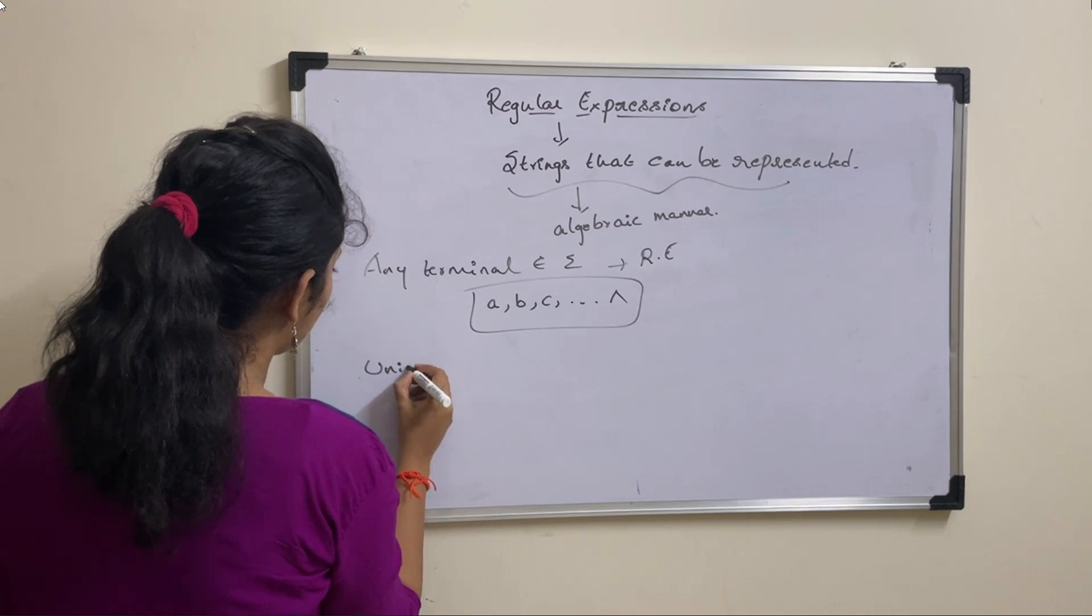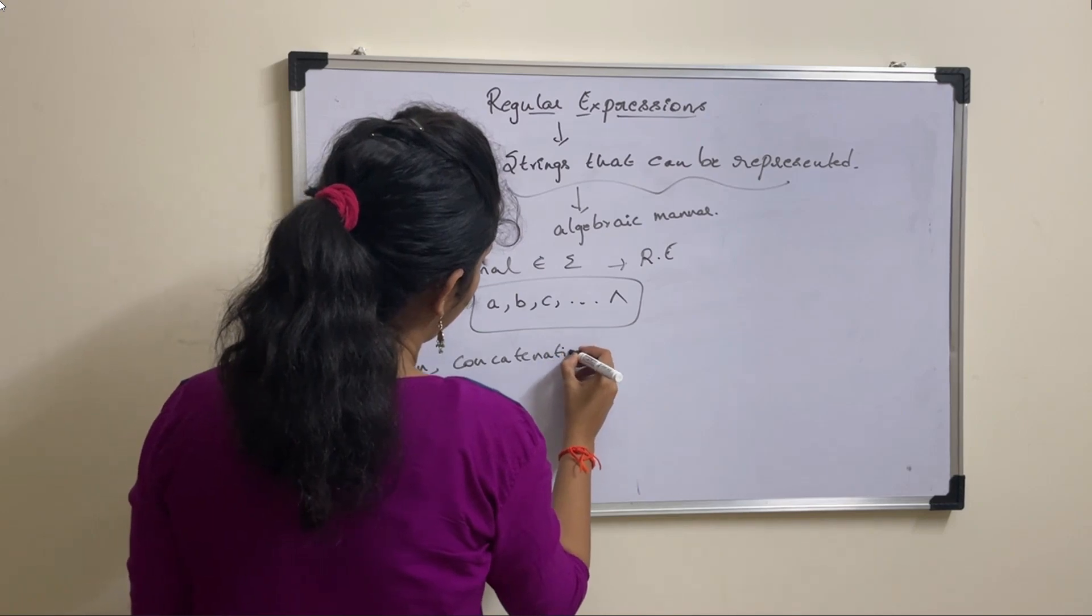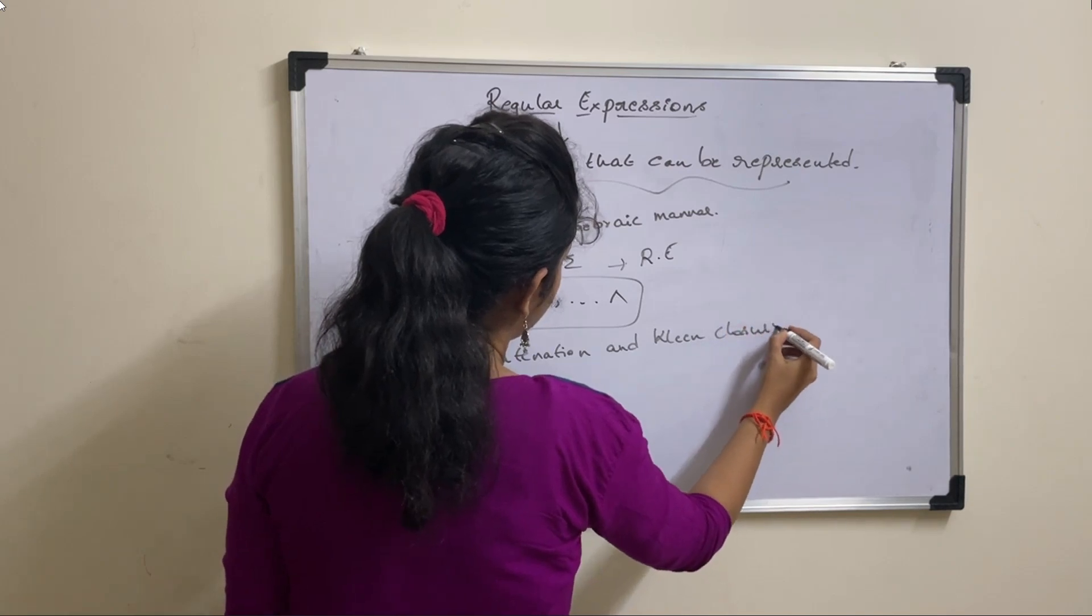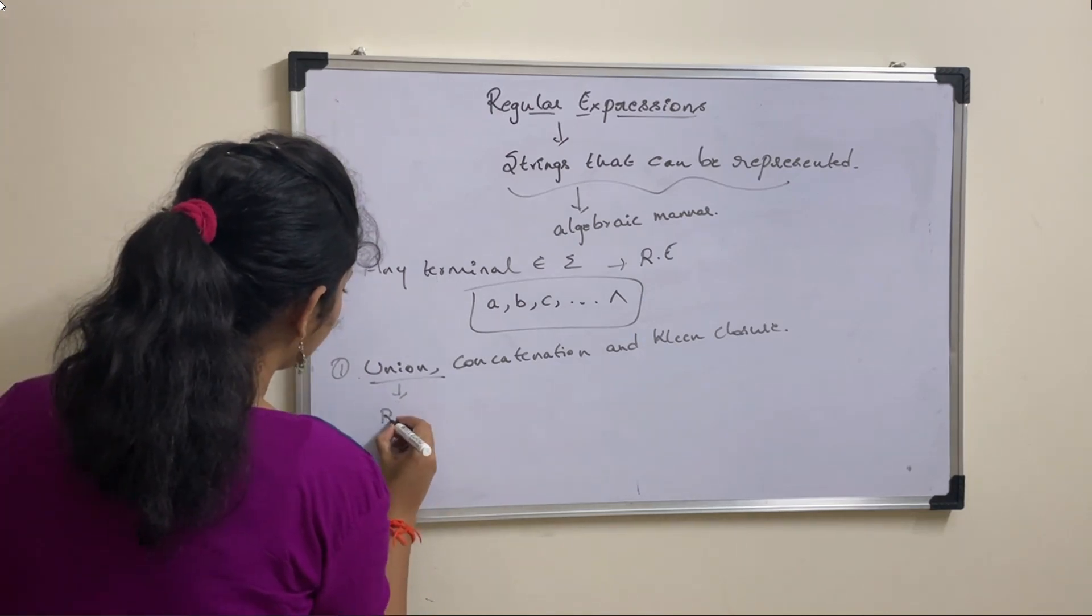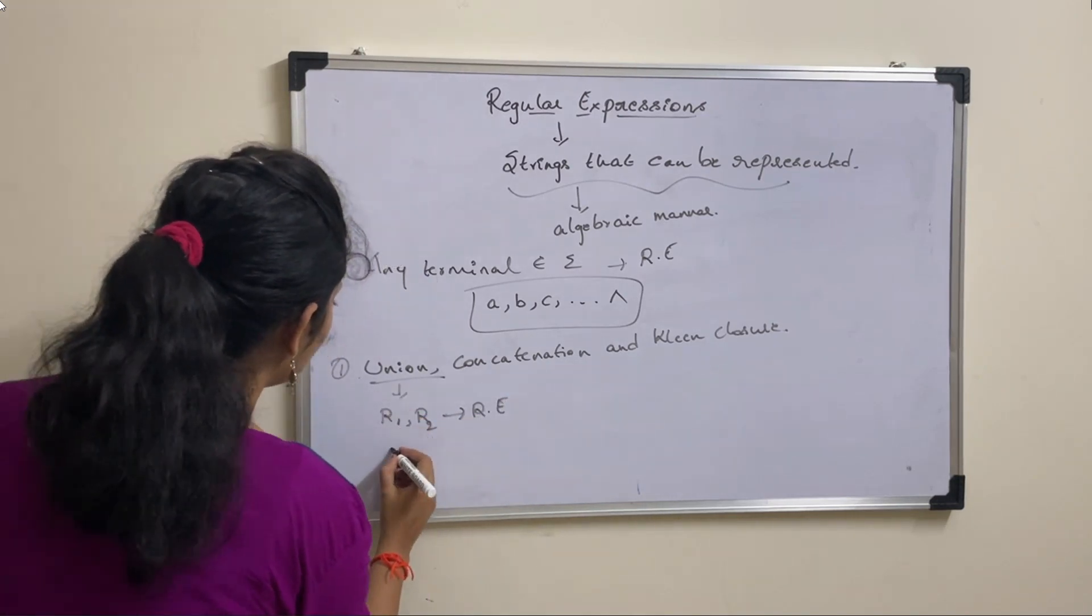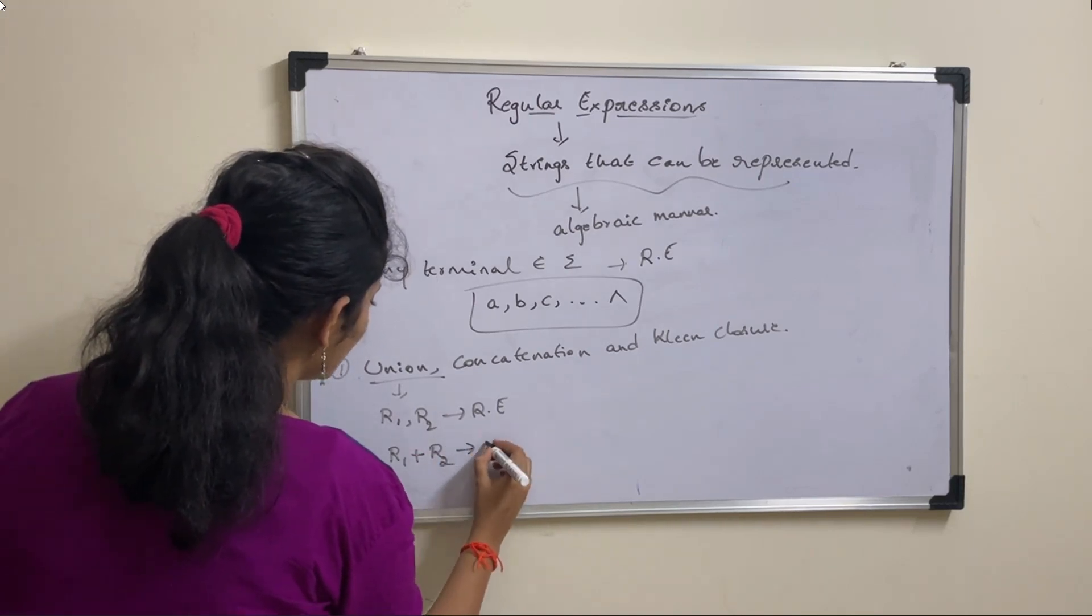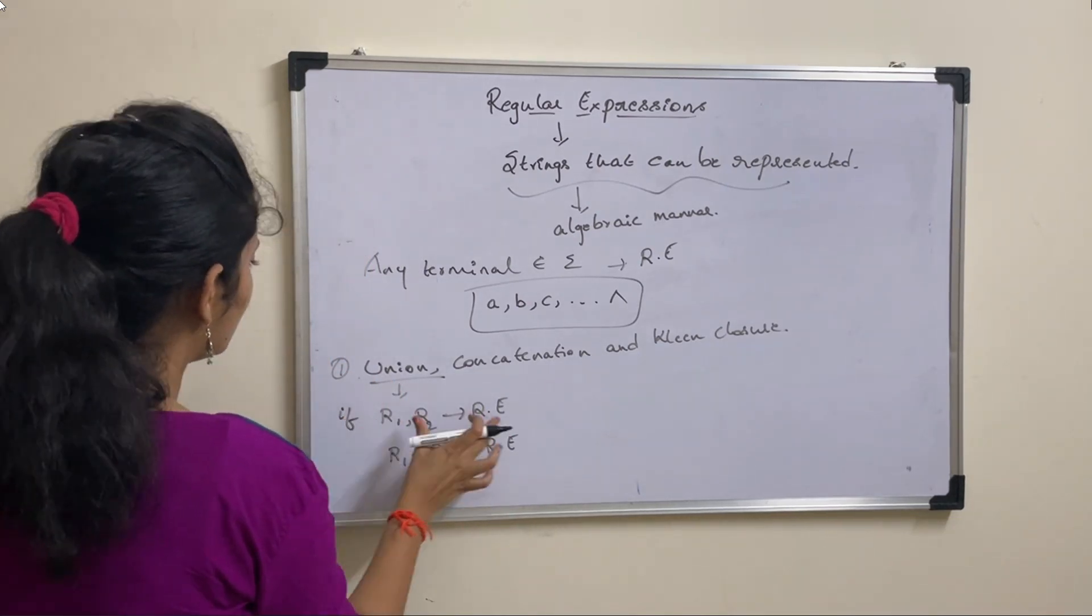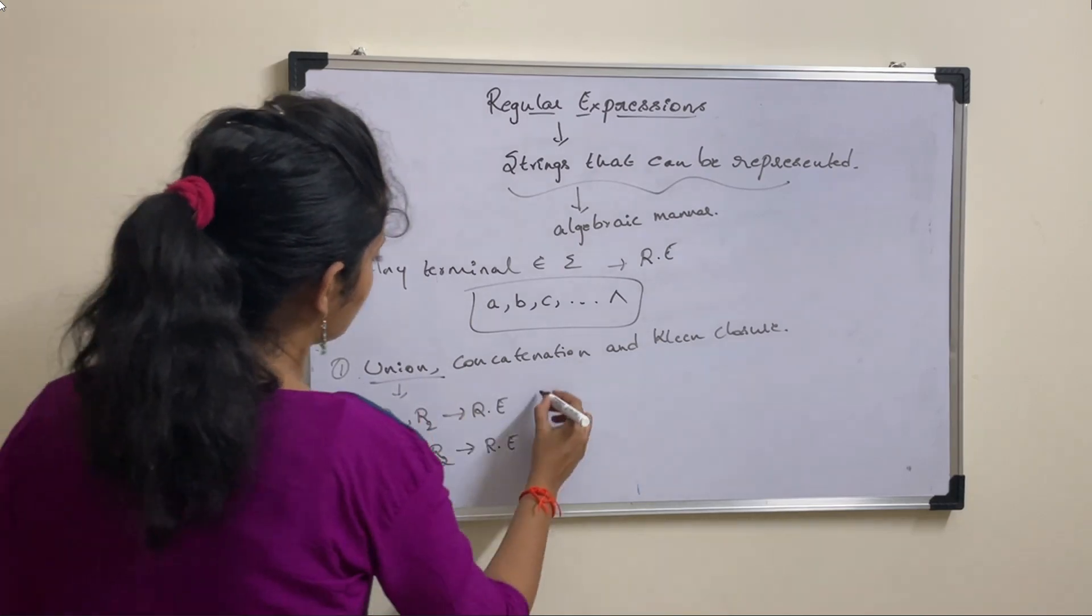Next, if you consider operations here: union, concatenation and Kleene closure. First, if we discuss about this union, say suppose if R1 and R2 are two regular expressions, then union can be represented as R1 plus R2. Then this R1 plus R2 is also considered as a regular expression. If R1 and R2 are two regular expressions and R1 plus R2 which is nothing but union is also regular expression.